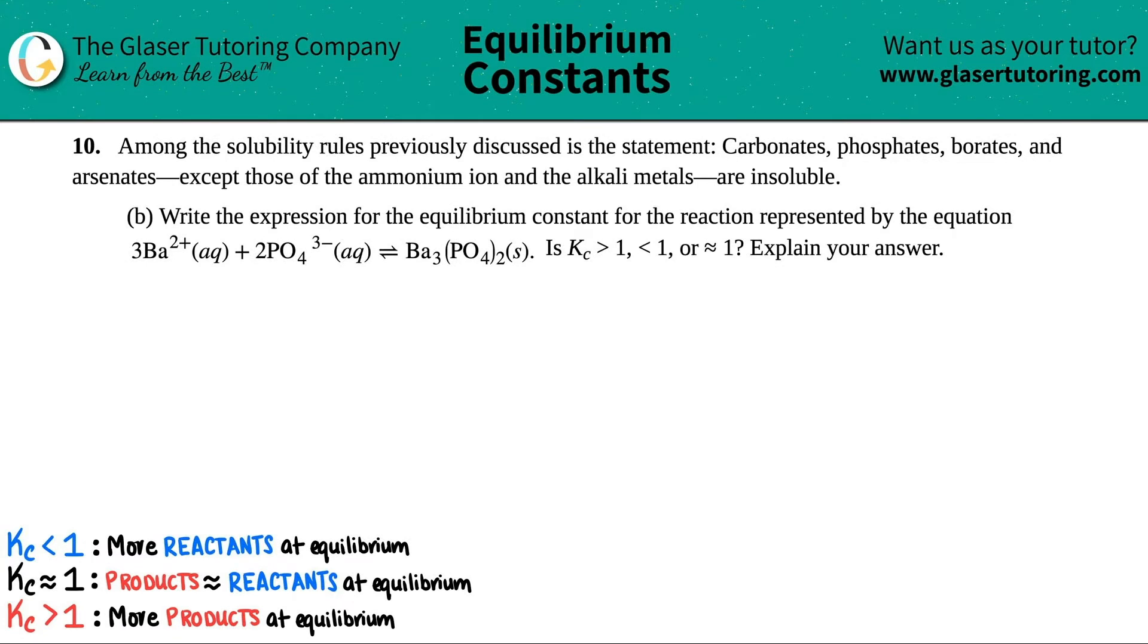Number 10. Among the solubility rules previously discussed is the statement: carbonates, phosphates, borates, and arsenates, except those of the ammonium ion and the alkali metals, they're all insoluble.